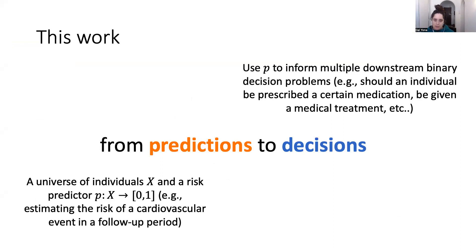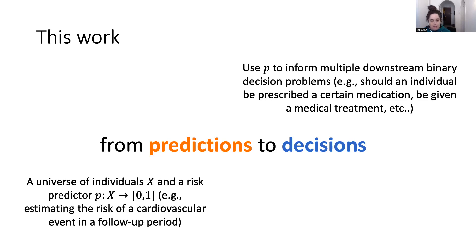Our focus in this work is on a setting that we call 'from predictions to decisions.' By predictions, we suppose that we have a universe of individuals X, given by their covariates or features, and we have access to some risk predictor — basically a mapping from every individual to a value in the interval 0-1. For example, we want to estimate a person's risk of having a cardiovascular event in some follow-up period.